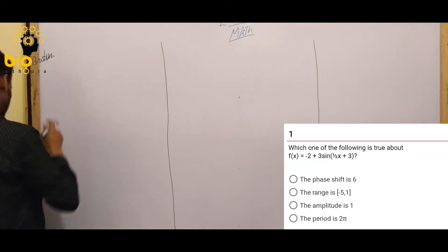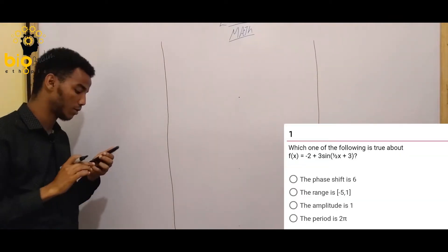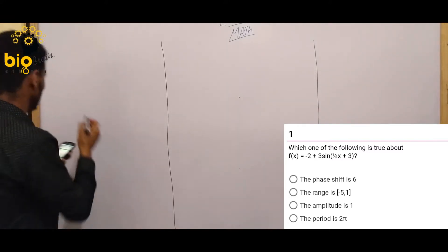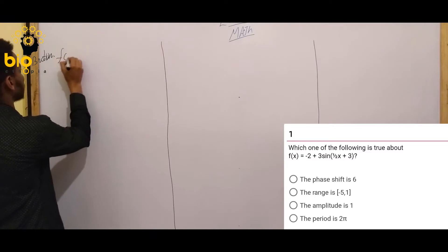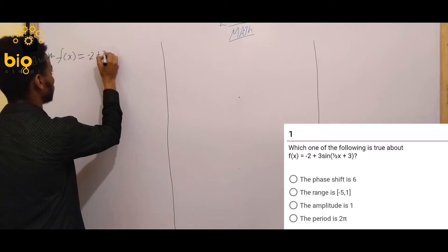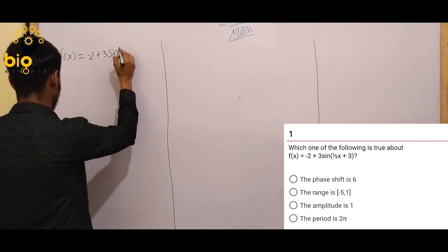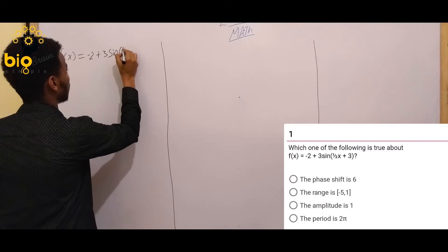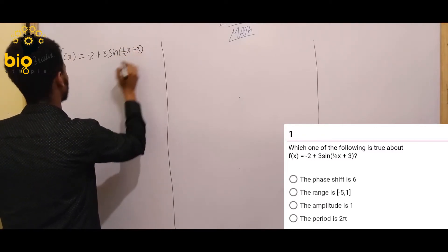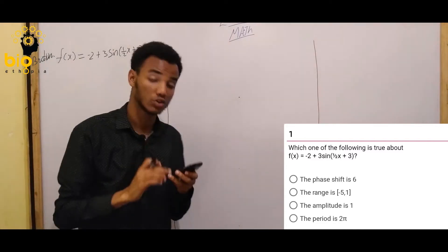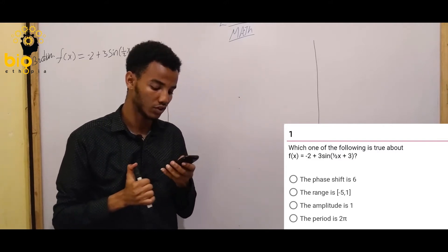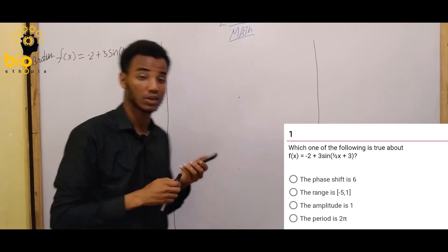Which of the following is true about f of x is equal to 2 minus 3 sign of 1 over 2x plus 3? Let's see — which one of the following is true: the amplitude, the range, or the period?